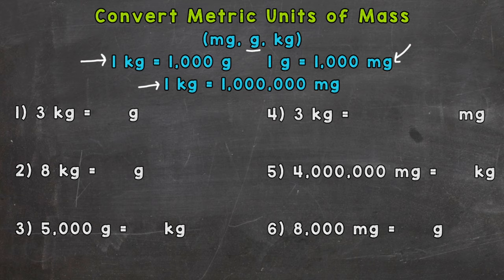So number one: three kilograms equals how many grams? Well, one kilogram equals a thousand grams, but we have three. So we can do three times one thousand to give us how many grams that would equal. And that's going to give us three thousand grams.